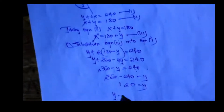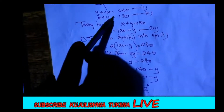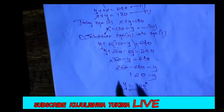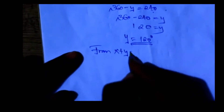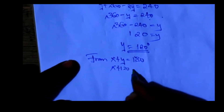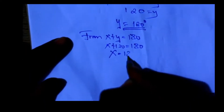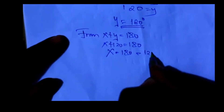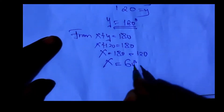This is Y. And therefore, since this is the value for Y — Y equals 120 degrees. In order to get the value of X, taking equation number 2: X plus Y equals 180. X plus 120 equals 180. Then X will be equals to 180 minus 120. X will be equals to 16 degrees (60 degrees).